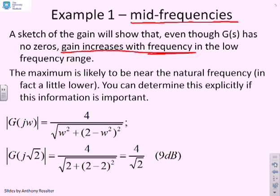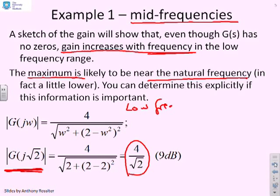I'm not going to prove it here, but the maximum for the gain is quite near the natural frequency. In fact, it will be a little bit lower. If I put in the natural frequency root 2 and calculate the gain, I get 4 over root 2, or 9 decibels. At low frequency, the gain was 2, or 6 decibels. So the gain has gone up, which is perhaps surprising.